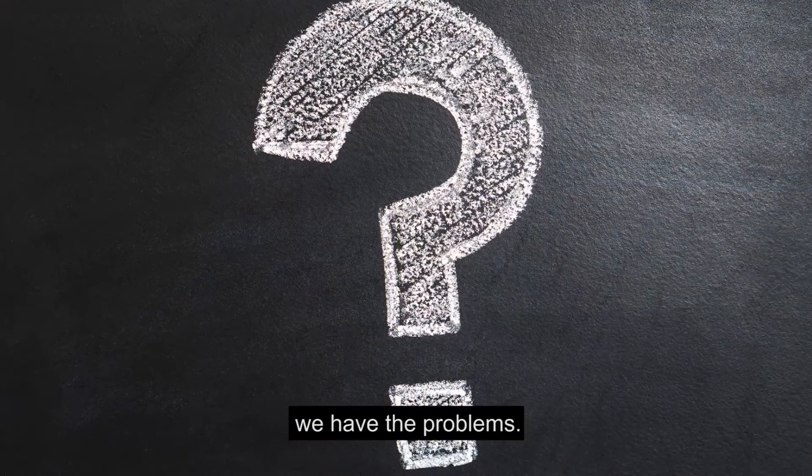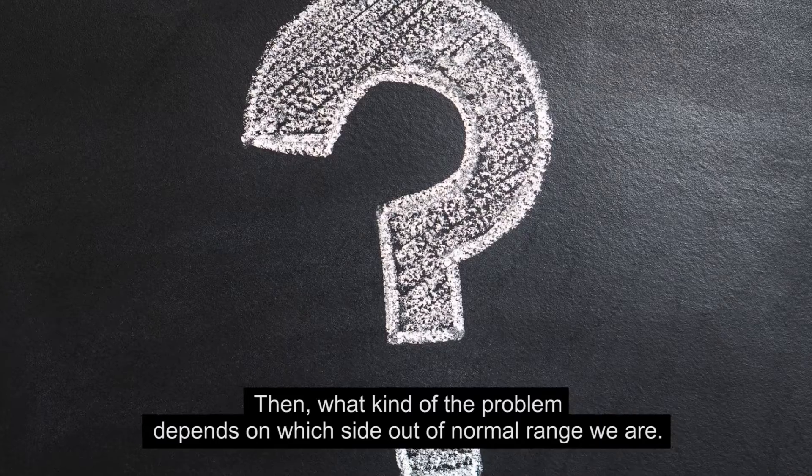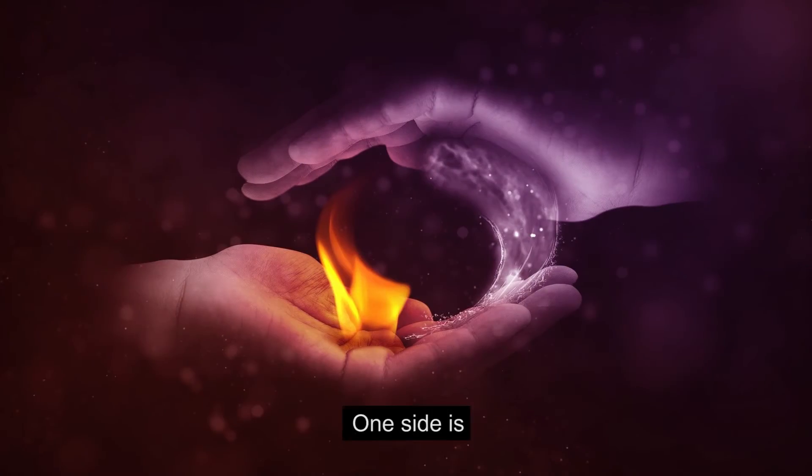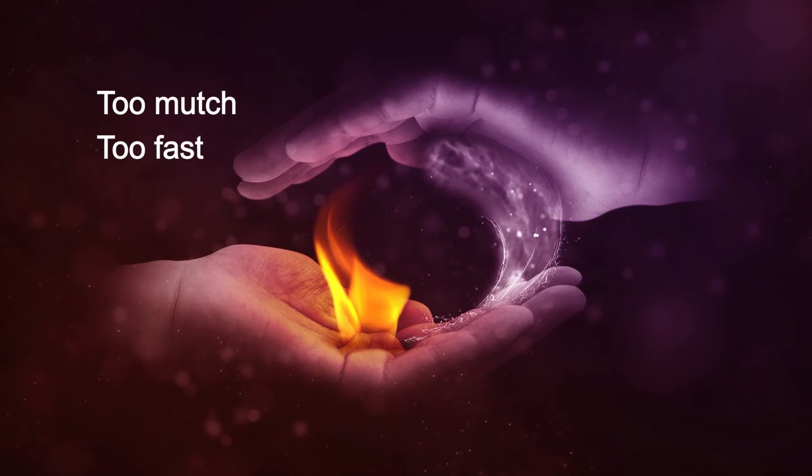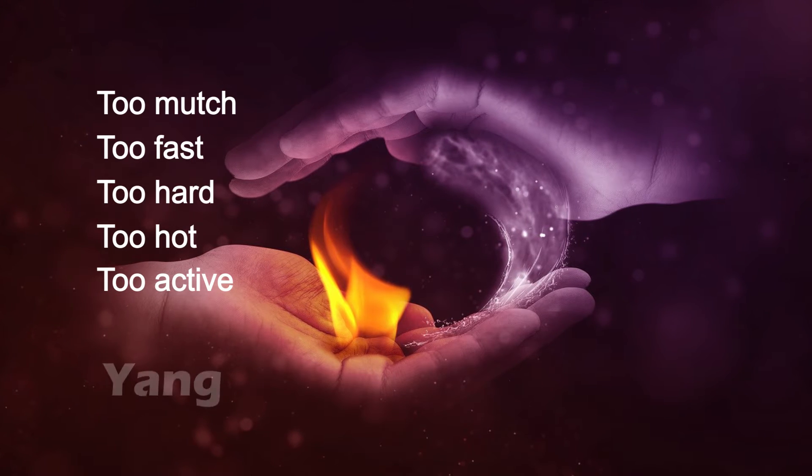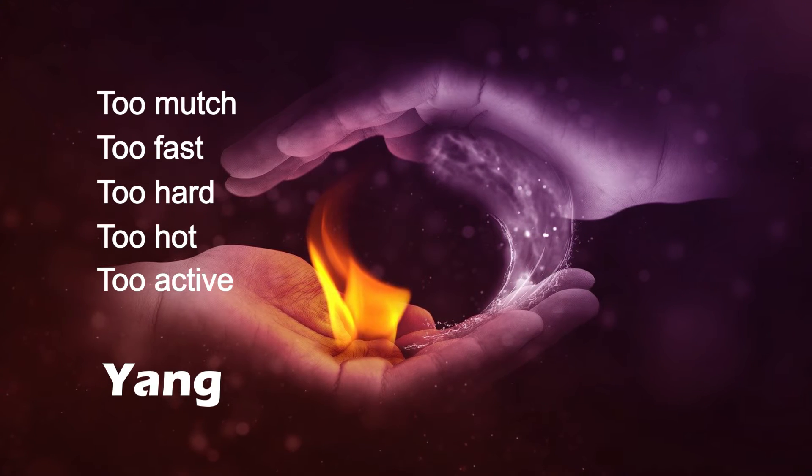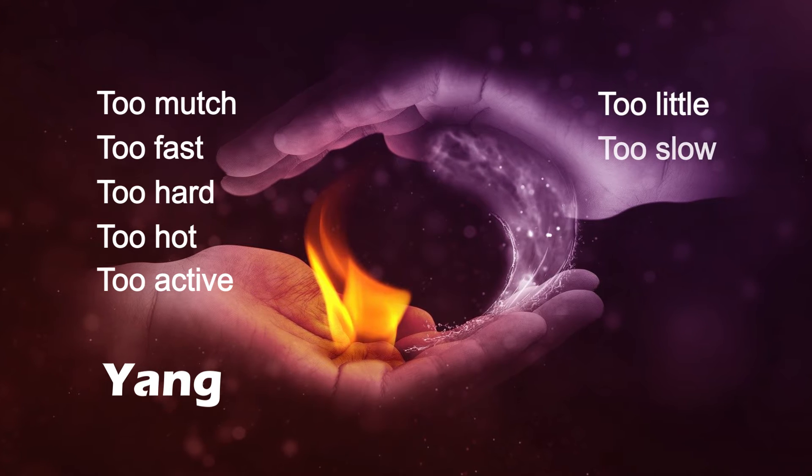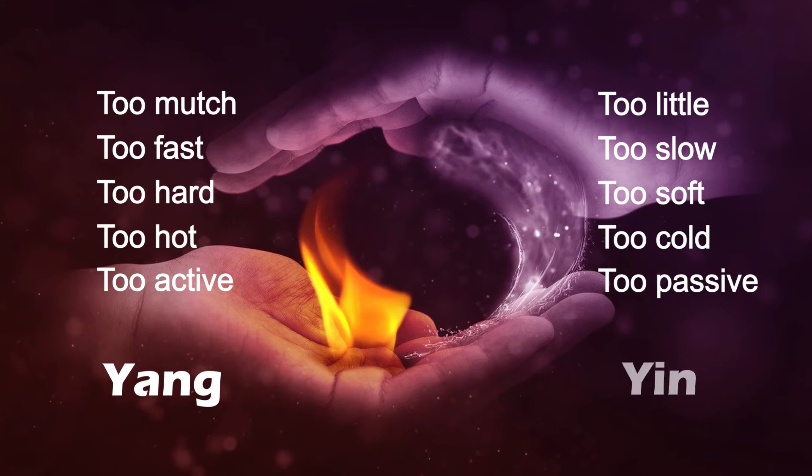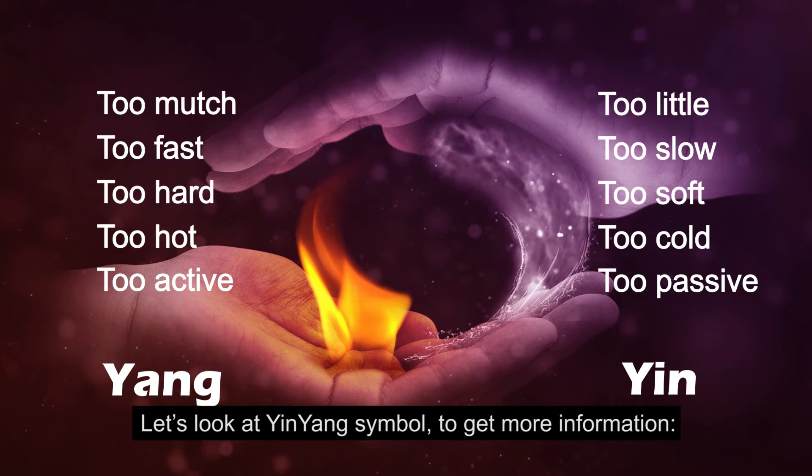Then what kind of problem depends on which side out of normal range we are. One side is too much, too fast, too hard, too hot, too active—we call Yang. The other side is too little, too slow, too soft, too cold, too passive—we call Yin.